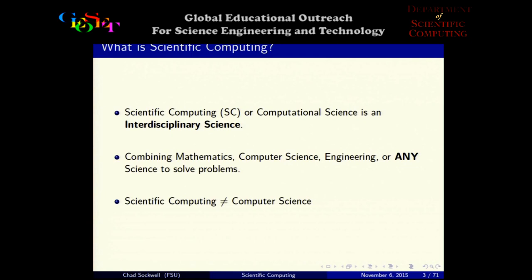Scientific computing, or computational science, is an interdisciplinary science which means we use tools from mathematics and computer science and combine them with any other science that has problems to be solved — physics, engineering, chemistry, biology, or even economics. A common question is whether scientific computing is the same as computer science, and the answer is no. In computer science they strive to build the best possible computer using optimized software, whereas in scientific computing we take that best possible computer and use it to solve problems efficiently.